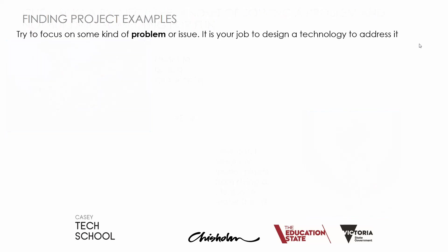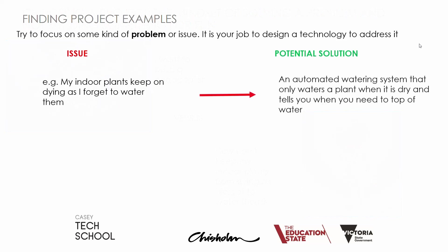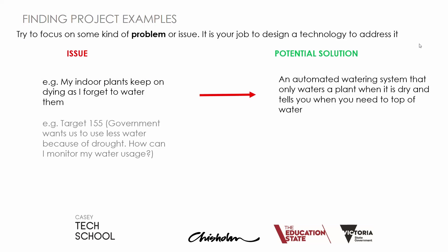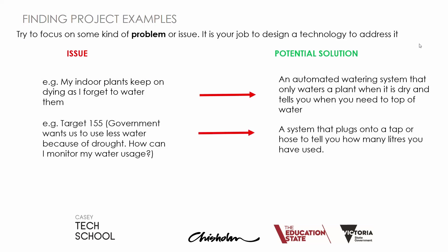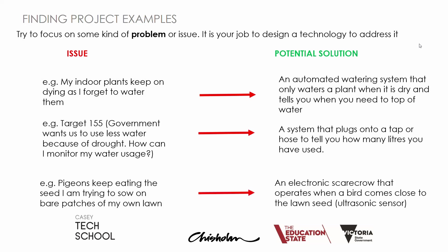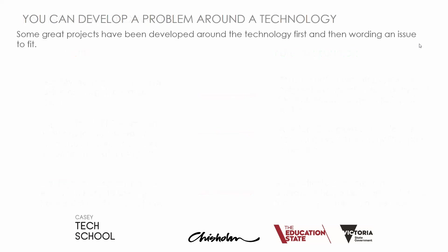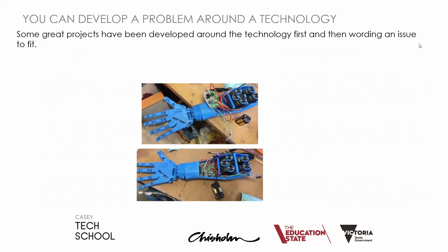There are examples of problems in our lives. For example, gardening is a big thing in my life at the moment, so there are many problems I've encountered in the garden, and I start to think about potential solutions. You can develop your project around a technology already in mind, but it's much more difficult to do.